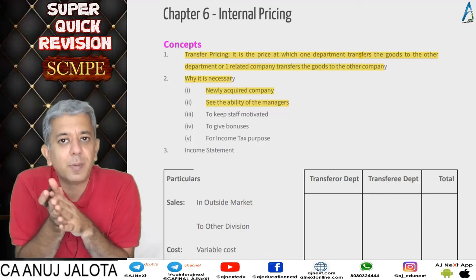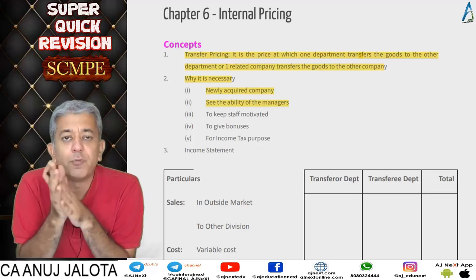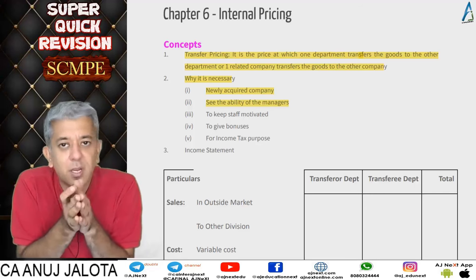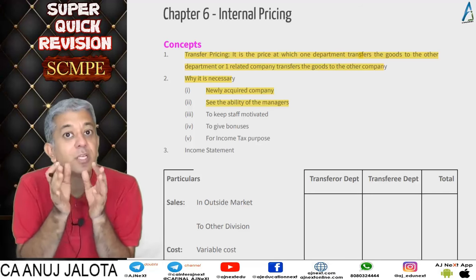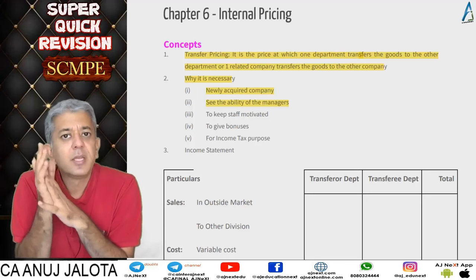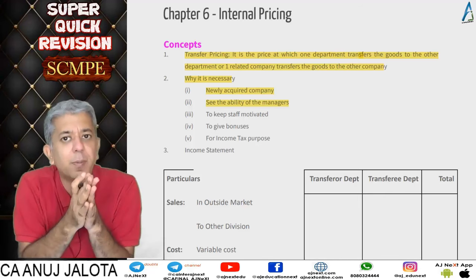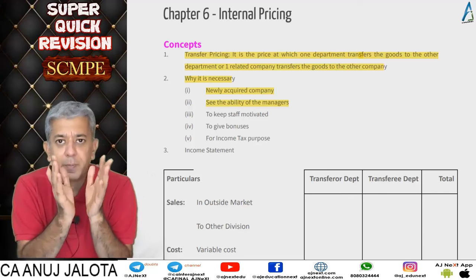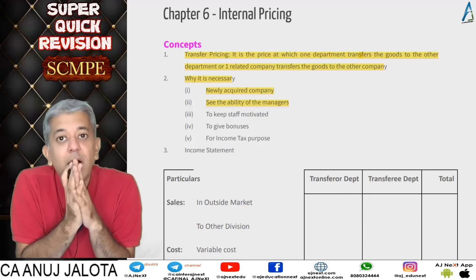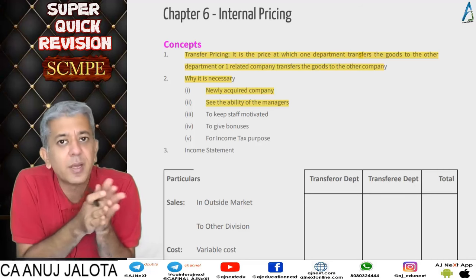One of the main reasons for transfer pricing is performance evaluation of a department — how a department is performing, good or bad. Transfer pricing is required especially when there is decentralization. Decentralization means the CEO doesn't do all the work; every department has an independent head and an independent structure, and each department evaluates itself.